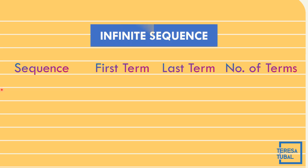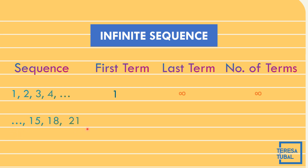Let us see examples of the infinite sequence. First: 1, 2, 3, 4, then ellipses. The first term is 1, there is no last term — it is infinite. Second example: ellipses, 15, 18, and 21. The first term is infinite and the last term is 21; the number of terms cannot be distinguished. Third: 38, 36, 34, 32, then ellipses — first term is 38, last term is infinite, and the number of terms is infinite.